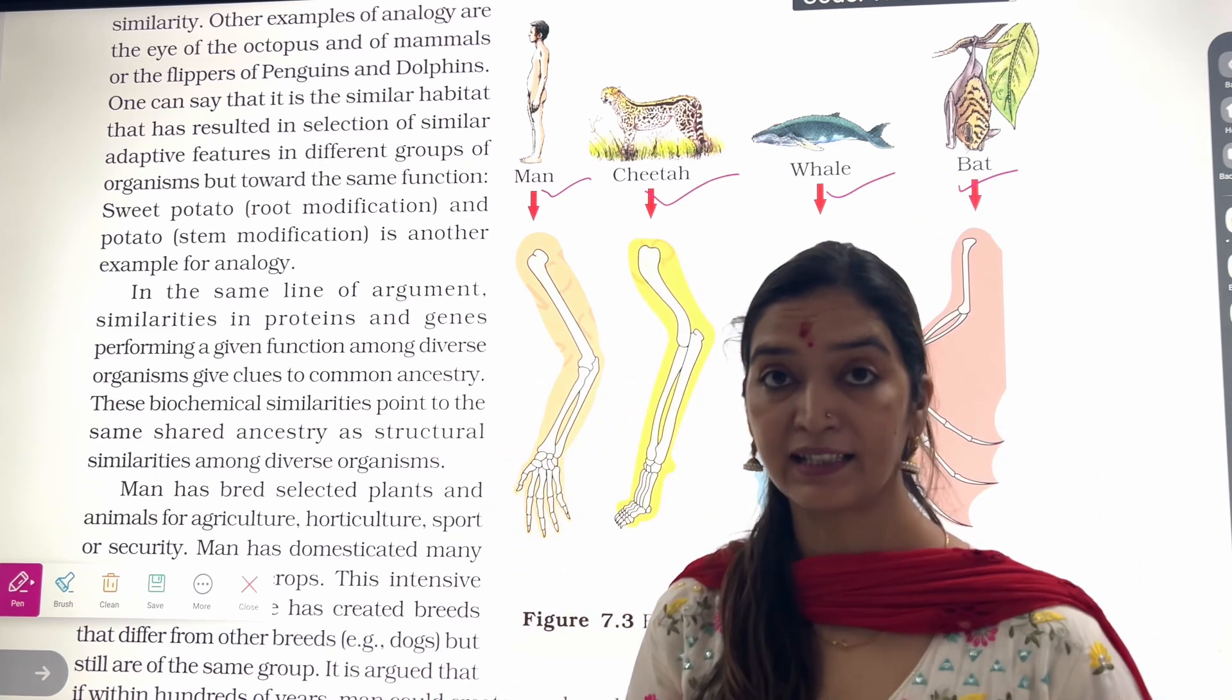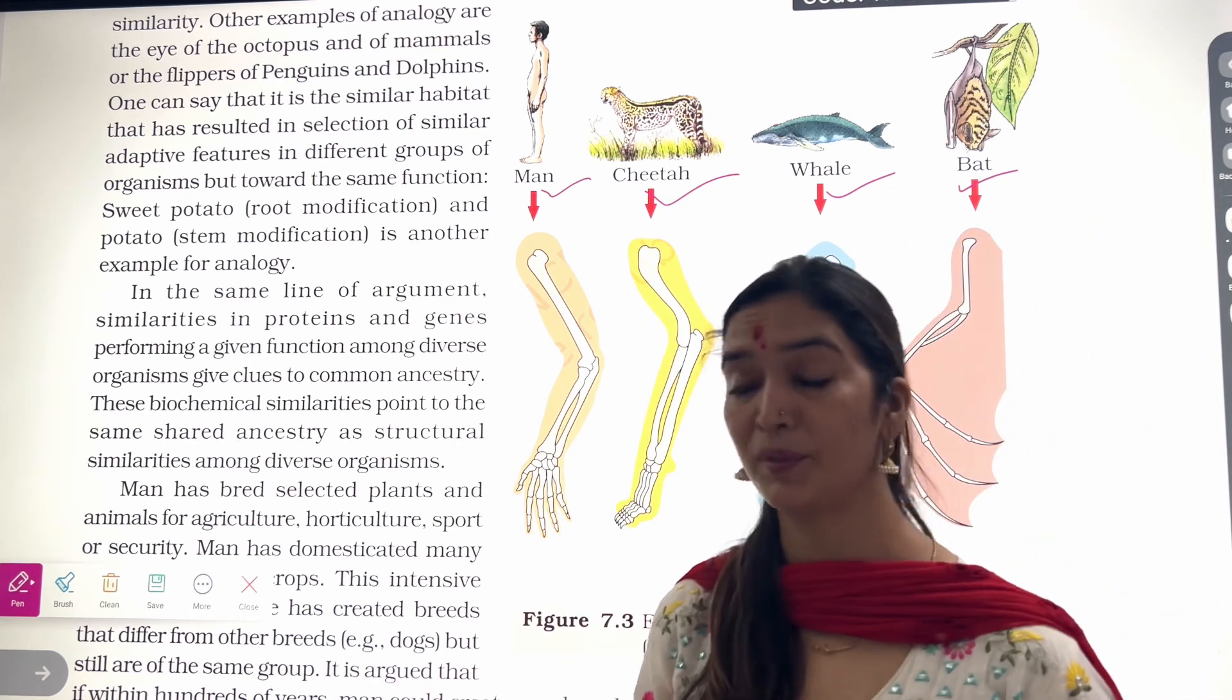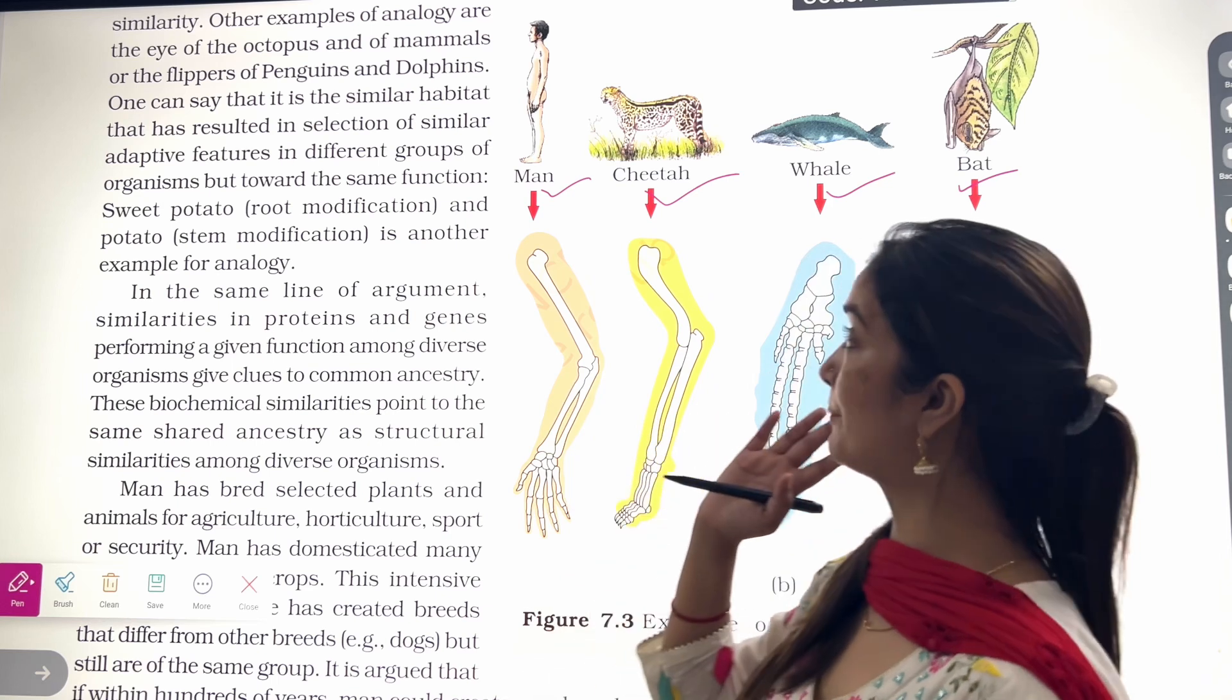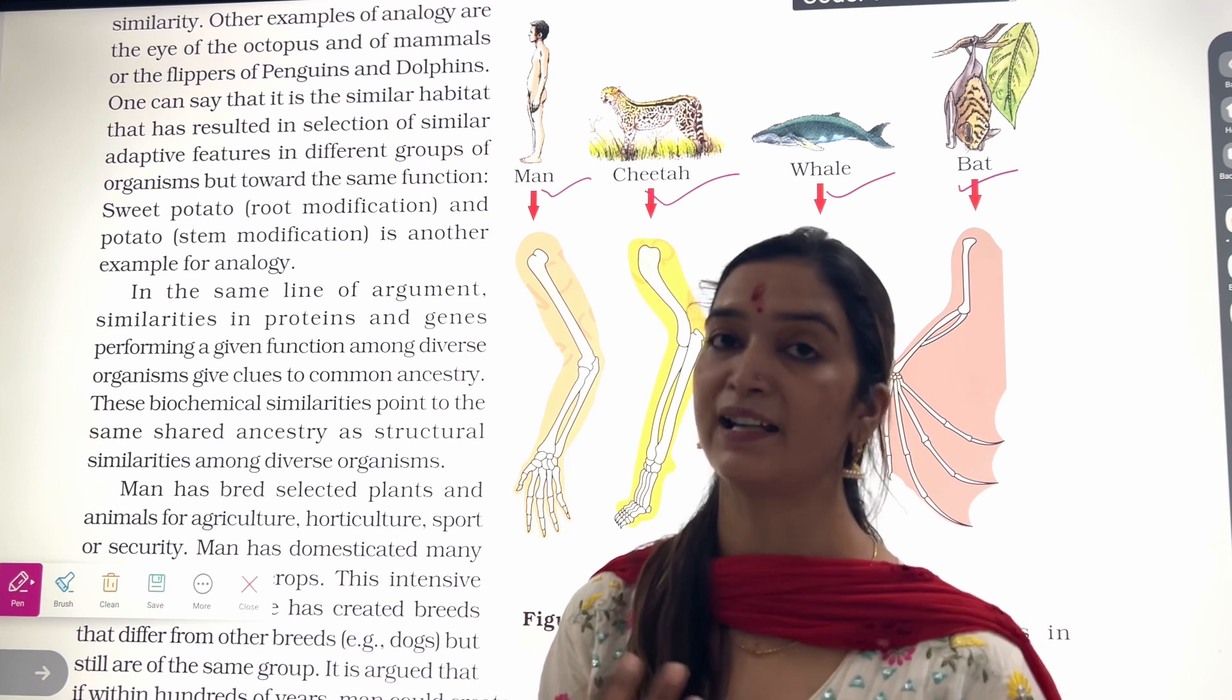And cheetah is used for running, whale for swimming, and bat is used for flying. So all are the examples of mammals, but all of them are used for forelimbs or hind limbs.